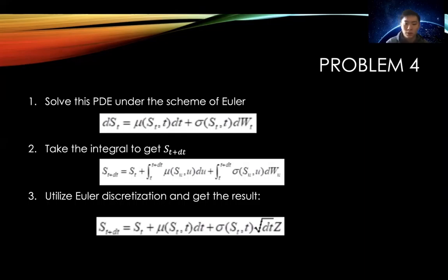For the second integral, we can get sigma times square root of dt Z. Based on that, we can get the Euler solution, which is the third expression.